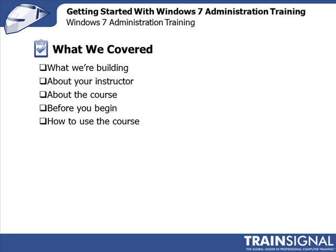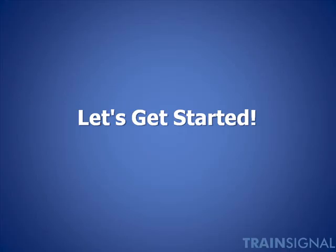In this lesson, we covered what we're building. We talked about what's going to be going on in this course and what the end goal is — to make sure we have a viable Windows 7 implementation plan for Globomantics. You learned a little bit about your esteemed instructor, Scott Lowe. We talked about the course itself, how it's broken down, and many of the topics that will be covered. You then learned about some things you need to understand before you begin, which are important foundational elements, so don't take them lightly. We then wrapped up by talking about how to use this course to best effect. Thank you for listening and I look forward to seeing you throughout the rest of the course.